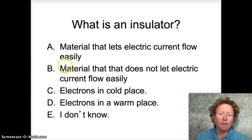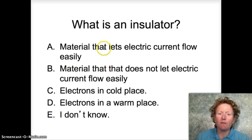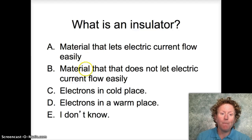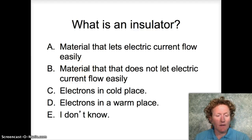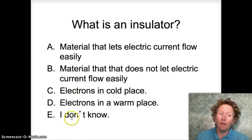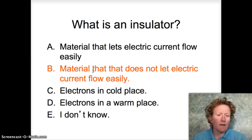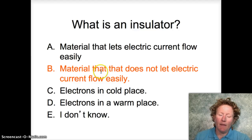So what's an insulator? The options are: materials that let electric current flow easily, material that does not let electric current flow easily, electrons in a cold place, electrons in a warm place, or 'I don't know.' An insulator is B — a material that does not let electric current flow easily.